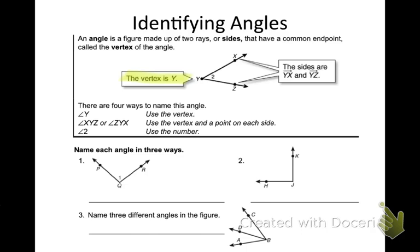There are four ways to actually denote this specific angle. You can say angle Y. When there's no other ray up there and it's just the one vertex, you can just say just the letter, so angle Y. I cannot say just angle Y if I add another ray to it. Now I have technically two different rays. I cannot say just angle Y because I don't know which one I'm talking about now. But when it's just itself, you can.